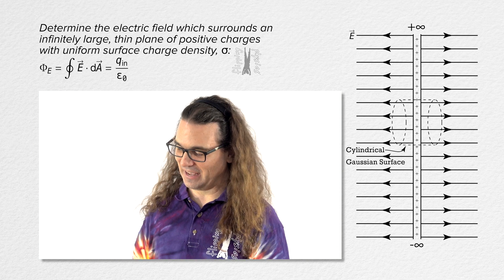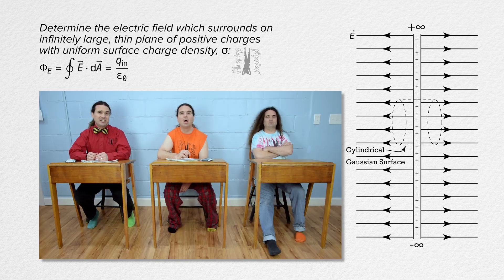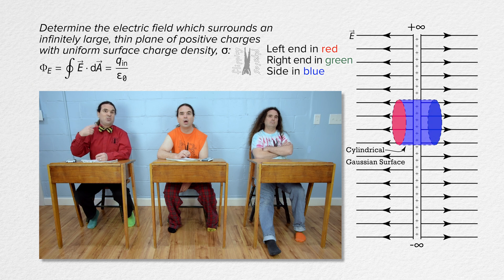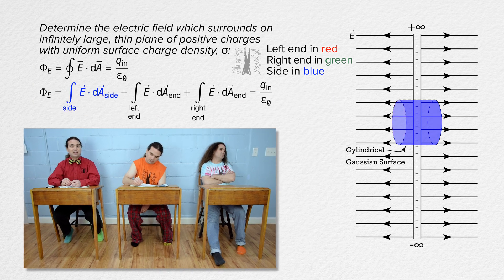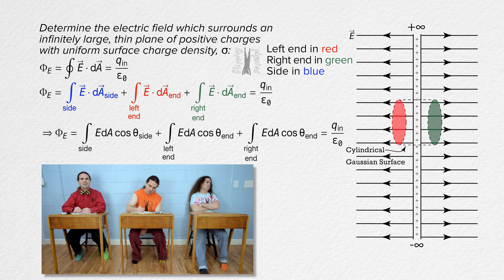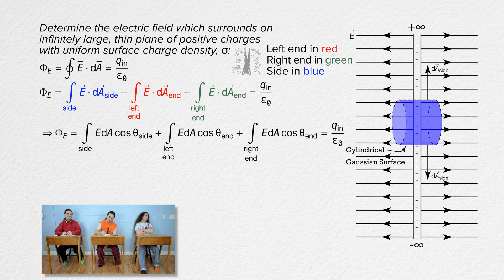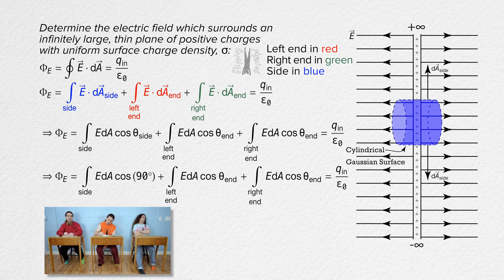Billy, please solve for the electric field in this case. The imaginary closed Gaussian cylindrical surface is made up of three surfaces: the two ends of the cylinder and the side of the cylinder which wraps all the way around. The electric flux through the closed Gaussian cylindrical surface equals the flux through the side plus the flux through the left end plus the flux through the right end. The angle for the side of the Gaussian cylindrical surface is between a horizontal electric field and the direction of any dA on the side, which is always 90 degrees. Because the cosine of 90 degrees equals zero, there is zero electric flux through the side of the Gaussian cylinder, which makes sense because the electric field lines do not actually pass through the side.